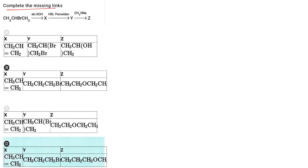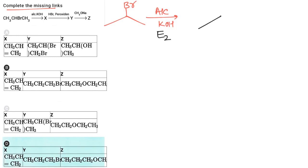To complete the missing link: in this molecule we start with 2-bromopropane, CH3CHBrCH3. When treated with alcoholic KOH, E2 elimination takes place and an alkene is formed.